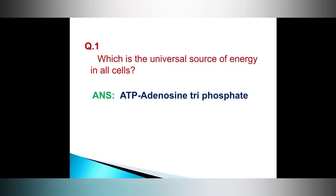Question number 1. Which is the universal source of energy in all cells? Answer. ATP, adenosine triphosphate.